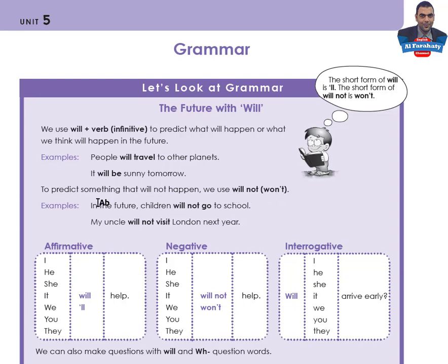To predict something that will not happen, we use 'will not' or the short form 'won't.' For example: 'In the future, children will not go to school.' We can also use the short form: 'In the future, children won't go to school.' Another example: 'My uncle will not visit London next year,' or 'My uncle won't visit London next year.'